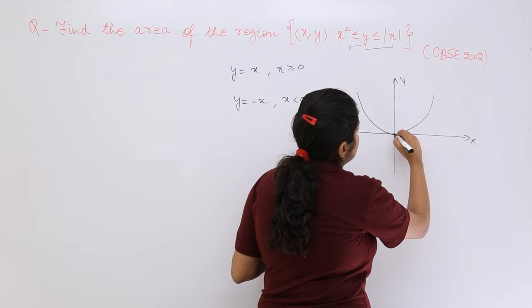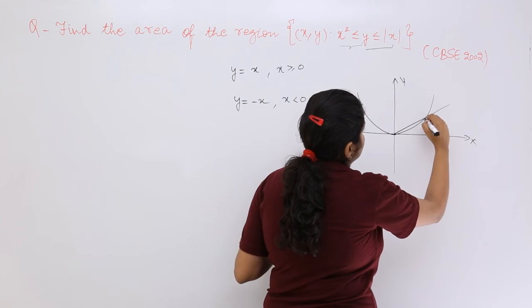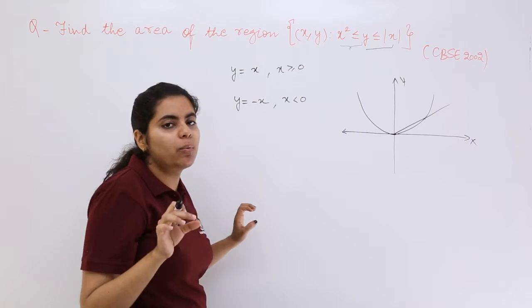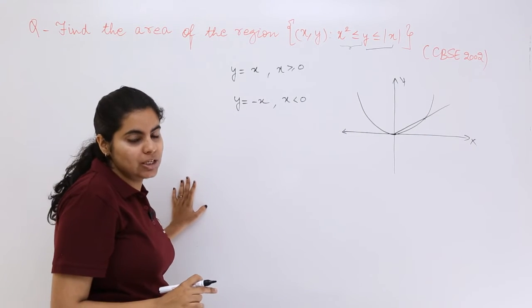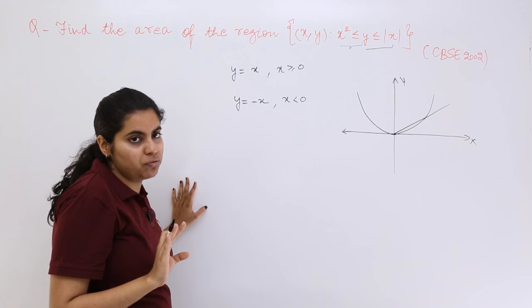So it is somewhere here and you can see this is somewhere here. This is the point of intersection, but exactly what point is it we will be putting in the equation and knowing. So it should be made at an angle of 45°.